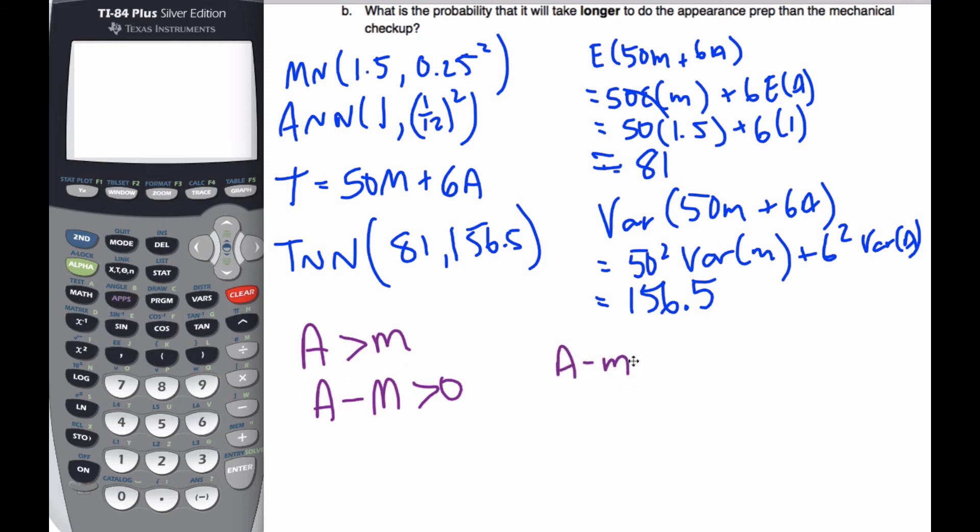So A minus M, if I want the expected value, well, it's going to be 1 minus 1.5. And it's going to be normal, so I'll make it normal. It's going to be negative 0.5. It's going to be normal because A and M are both normal.